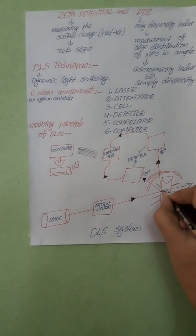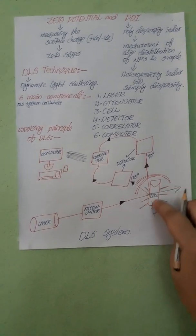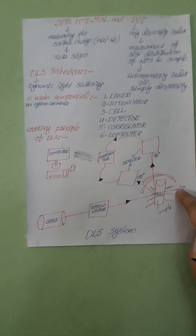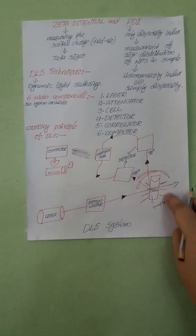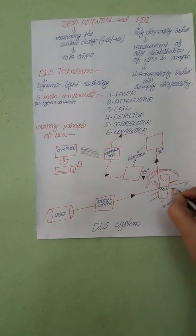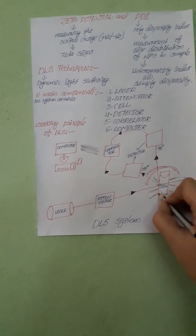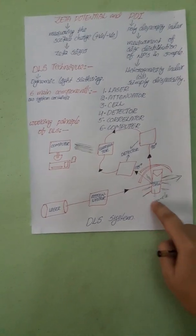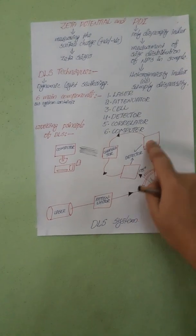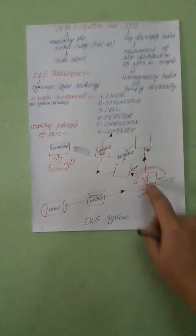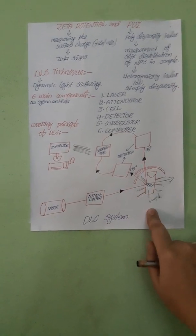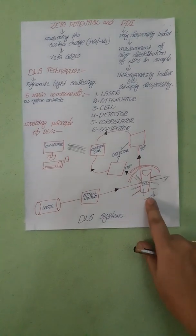But if any particles are present in the sample, the light will scatter in different directions. If any particles are in the sample, the light will scatter or focus to different directions. This scattered light is detected by the detectors.